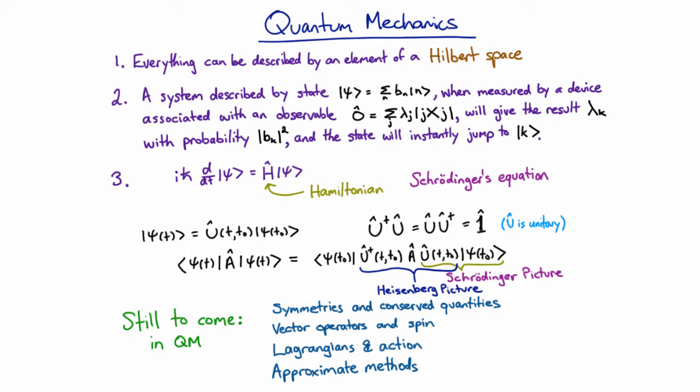Let's take a moment to look at the big picture of what we've learned in quantum mechanics so far. Everything can be described by an element of a Hilbert space, which is basically just a vector space.